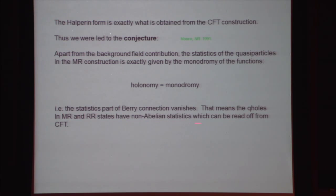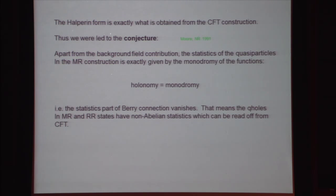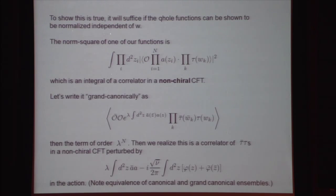In the case of the Pfaffian functions, the monodromy is non-trivial and non-abelian. The functions are multi-valued and come back to distinct linearly independent functions under continuation, giving a non-abelian Berry matrix for the exchange. That's exactly what you have in conformal field theory — braiding in correlators is just the analytic continuation of the positions of the primary fields. For the adiabatic calculation, according to this idea, it's basically the same apart from the background effect. So it will be sufficient to show that the quasi-hole functions are normalized independently of W — if we can show the conformal block trial states have W-independent normalization, we're done.